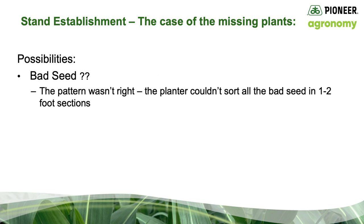Why were these seeds coming up so much slower or not at all? The first possibility that goes through every grower's mind in cases like this: did you sell me bad seed? Well, think about it — the pattern wasn't right. The planter couldn't sort all the bad seed in two-foot sections; it would be much more random across the field. Besides, most of the seed was emerging — some was just coming up slower than others.